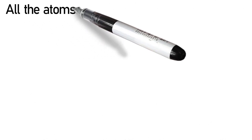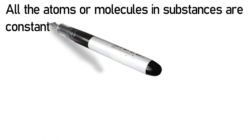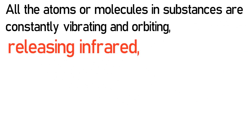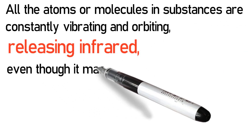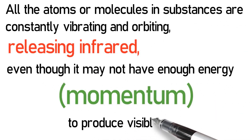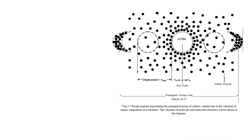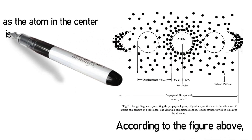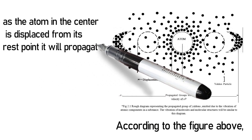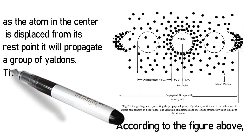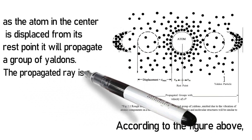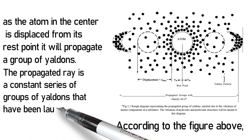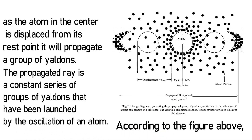All the atoms or molecules in substances are constantly vibrating and orbiting, releasing infrared, even though it may not be enough energy or momentum to produce visible light. According to the figure above, as the atom in the center is displaced from its rest point, it will propagate a group of Yaldins. The propagated ray is a constant series of groups of Yaldins that have been launched by the oscillation of an atom.